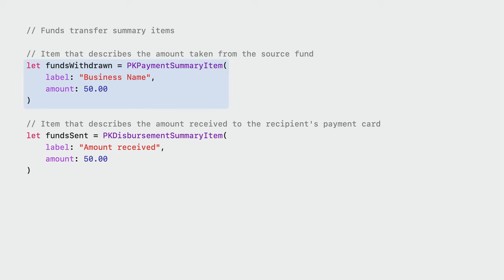Now that we've checked for eligibility, we can start building our transfer request. Similar to payment requests, the amounts are defined through summary items. We create two different summary items. The first is a PKPaymentSummaryItem, which represents the amount being withdrawn from the user's account — the label should be the name of your business. The second item is a new type, a PKDisbursementSummaryItem. You must include one of these, and it should always represent the final amount received onto the recipient's payment card, net of any fees, charges, or adjustments. For transfer funds with Apple Pay, the new request type is PKDisbursementRequest.